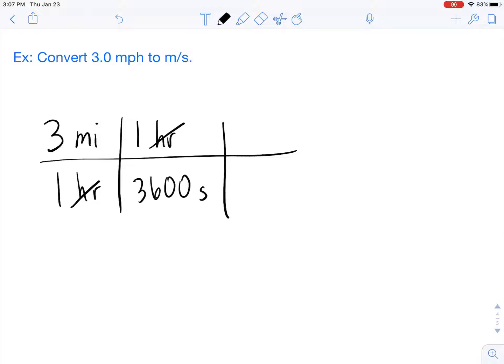Our next step would be to convert miles to meters. So for every one mile, there is 1,609.3 meters. So now we can cancel out our miles units.